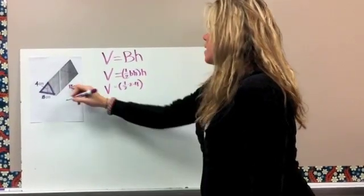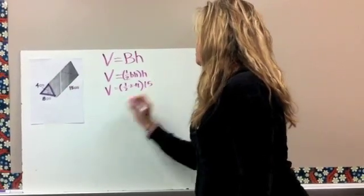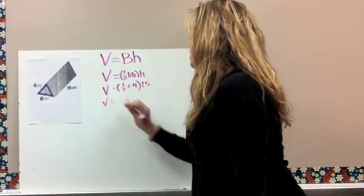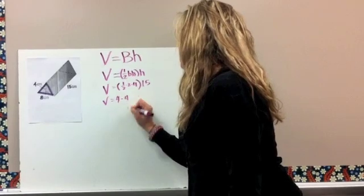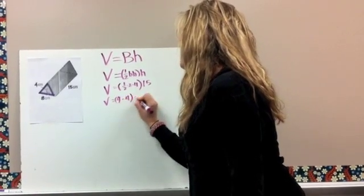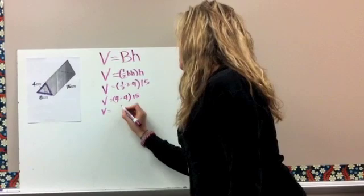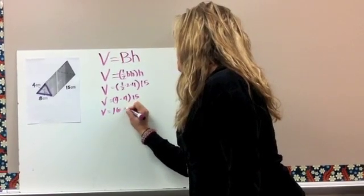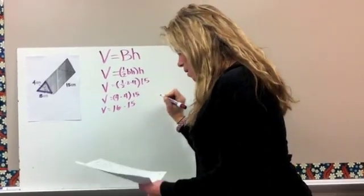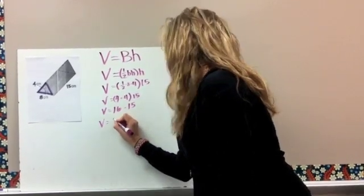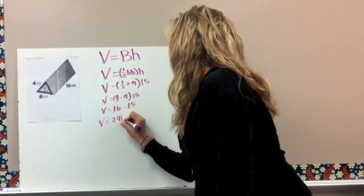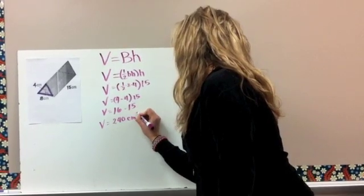Times the height of the prism. 1 half of 8 is 4, so we have 4 times 4 times 15. Keep getting smaller, and we have 16 times 15, and our volume of the triangular prism is 240 centimeters cubed.